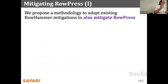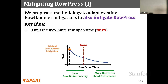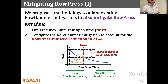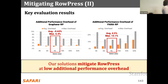To fix RowPress, you can adapt existing RowHammer mitigations. The key idea is to limit the maximum row-open time — don't allow it to be 70+ microseconds, set it to something smaller — and then configure the RowHammer mitigation threshold to account for the reduction in activation count needed to cause a bit flip when the row is open longer. This means the mitigation kicks in earlier when rows stay open longer. You can actually prove you're secure if you set your parameters correctly, though setting them right is the difficult part, and in extreme cases you may see higher performance overhead.